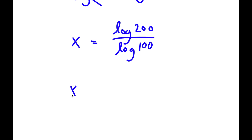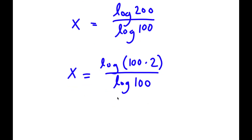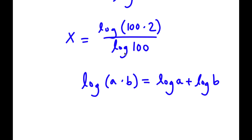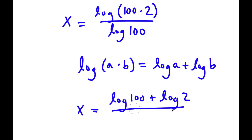Now, log 200 I can rewrite as log of 100 times 2, and I have this over log 100. If I have something in the form log a times b, this is equal to log a plus log b. So log 100 times 2 I can write as log 100 plus log 2, all over log 100.